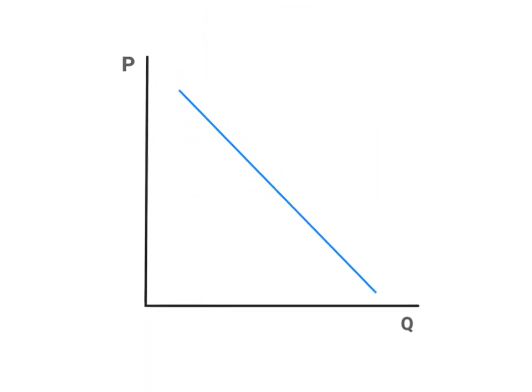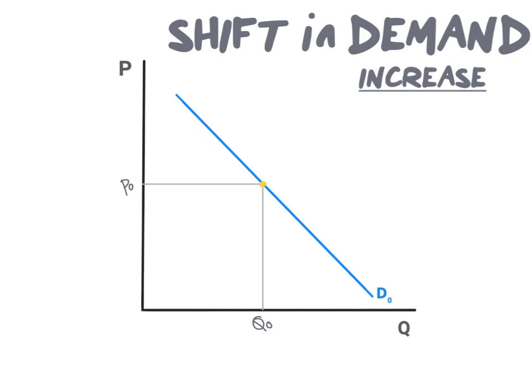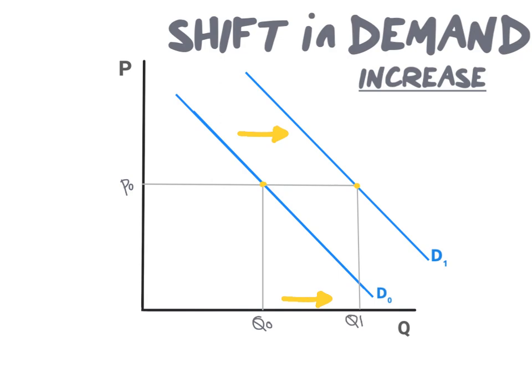Now it's time to look at a shift in our demand curve. Our starting point will be at demand zero, with a corresponding price zero and quantity zero. We will now increase demand. It's important to note that only our quantity will change while price remains unchanged. An increase in demand is illustrated by an outward shift of our demand curve. Our new demand is D1, with new quantity Q1. Therefore an increase in demand shifts our demand curve outwards or to the right. Price remains at P0 and quantity increases to Q1.